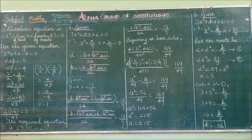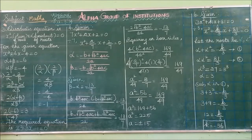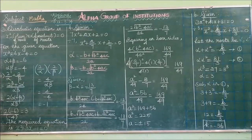Look at page number 122, exercise 3.14, third question. The roots of the equation x² + 6x − 4 = 0 are alpha and beta. Find the quadratic equations whose roots are: (i) α² and β², (ii) 2/α and 2/β, and (iii) α²β and β²α.